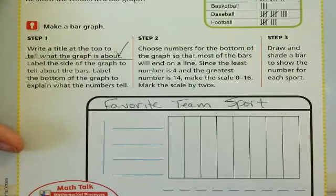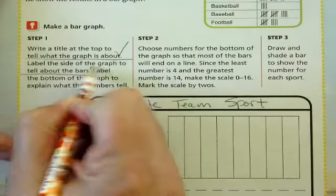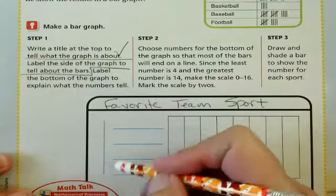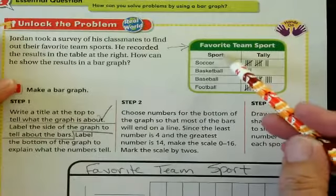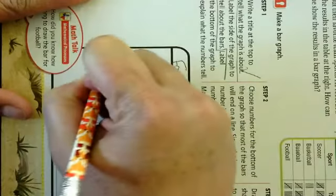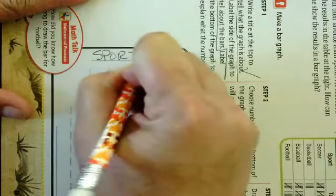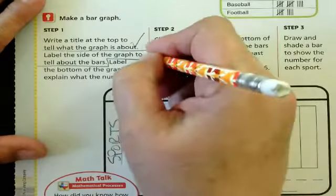Label the side of the graph to tell about the bars. That's the second thing we have to do. So it's talking about this one. So what is all of this over here going to be? Well, that's going to be the different sports. So we're going to write sports. Okay. I have done that one.